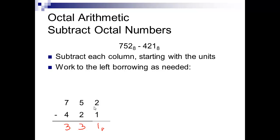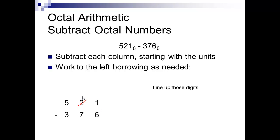We've got 521 minus 376. We can't take 6 from 1, so we're going to have to borrow. Take 1 away from the 2 — you've got 1 — and add the base, which is 8. So 8 plus 1 is 9. 9 minus 6 is 3. That's how you do it.